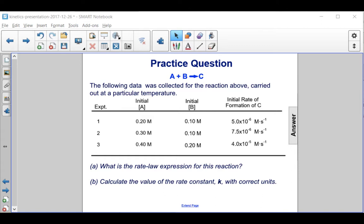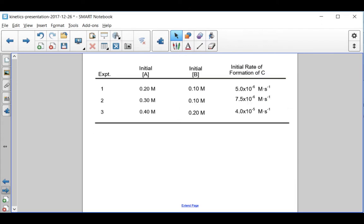First of all, what is the rate law expression for the reaction? And then once we know that, calculate the value of the rate constant K with correct units. Let's first find the rate law expression.